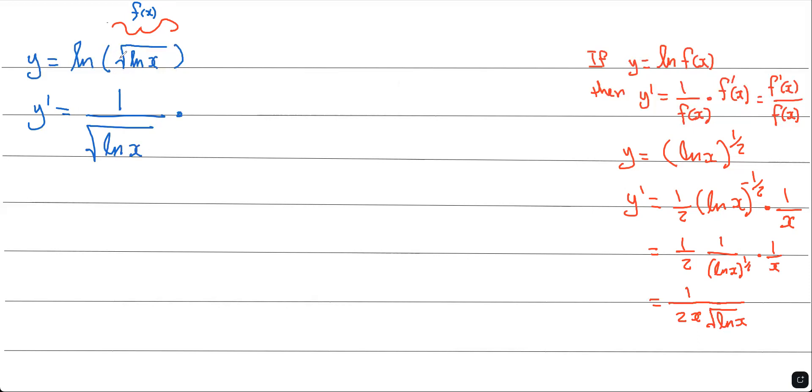The derivative of this, which we already calculated, is 1 over 2x square root of ln x. If you multiply these two, we get 1 over 2x, and the square root of ln x times square root of ln x gives me ln x. That is the final answer.